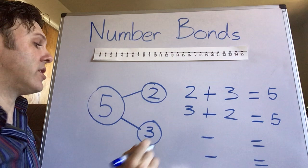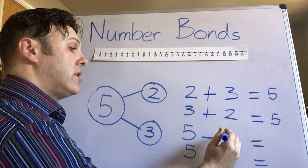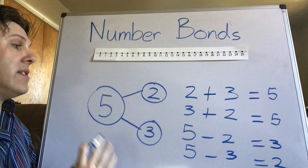Now another way is to use it for subtraction. So we know that the biggest number always goes first. So I'm gonna go ahead and put the five there. Now five minus two equals three and five minus three equals two.